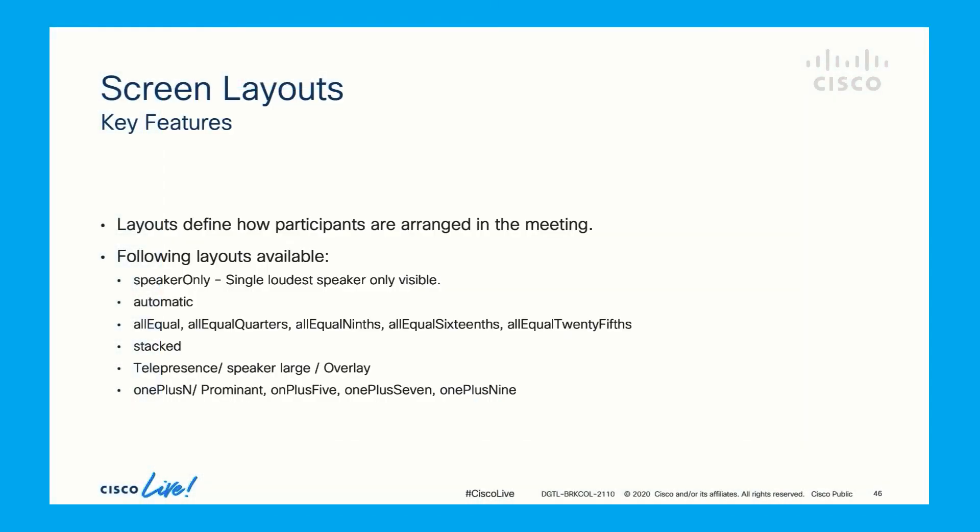Let's begin. CMS has multiple screen layouts for different meeting requirements. First is speaker only, which as the name suggests only shows the active speaker. Second is automatic, where the pane layout keeps changing based on the number of participants. Third is equal layout where all participants are shown in equal panes. The number of equal panes vary from 4 to 25, and it depends on the number of participants.